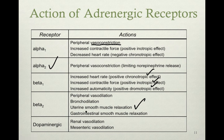Dopaminergic receptors: primarily dopamine-1 and dopamine-2. Dopamine-2 produces renal vasodilation and mesenteric artery vasodilation. Dopamine-1 is a precursor for norepinephrine, so triggering the dopamine-1 receptor causes the body to utilize more and more catecholamine.